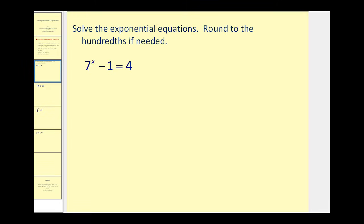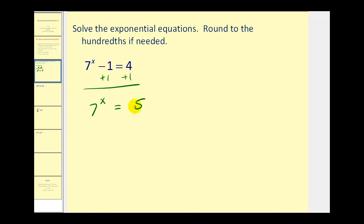For number one, we need to isolate seven to the power of x. So we'll add one to both sides of the equation, giving us seven to the power of x equals five. We obviously cannot get a common base here, so we'll take the log of both sides of the equation.